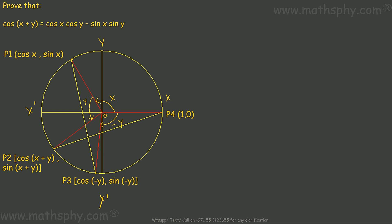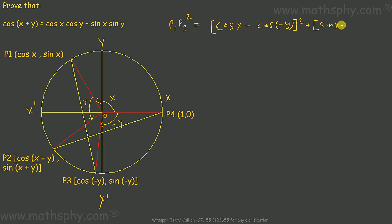We have already studied how to find the distance between two coordinates. To find the distance between P1 and P3, I write: P1P3² = (cos x − cos(−y))² + (sin x − sin(−y))². That is the formula to find the distance between two coordinates. We already know that cos(−y) equals cos(y).